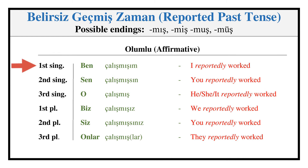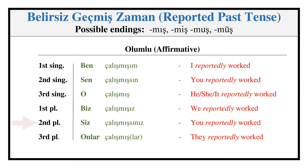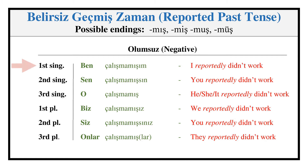Evidential Past — Affirmative: ÇALIŞMIŞIM, ÇALIŞMIŞSIN, ÇALIŞMIŞ. Negative: ÇALIŞMAMIŞIM, ÇALIŞMAMIŞSIN, ÇALIŞMAMIŞ.